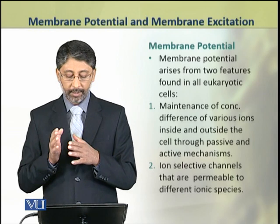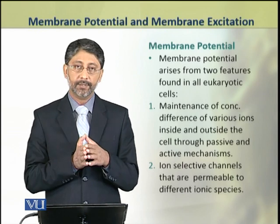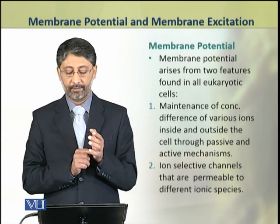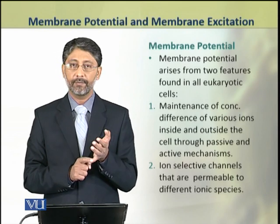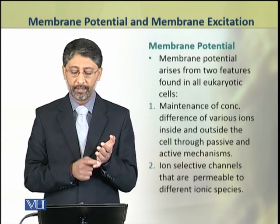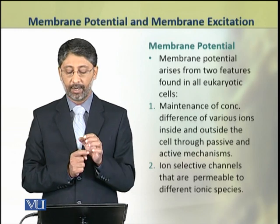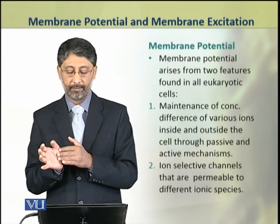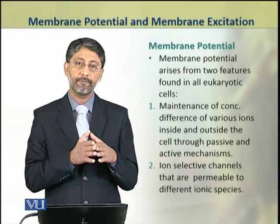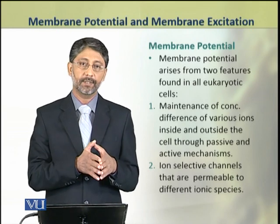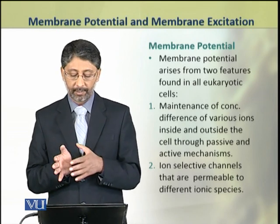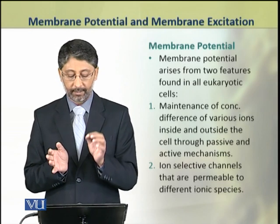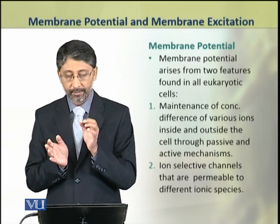The membrane potential arises because of two features found in all eukaryotic cells. One is the unequal distribution and maintenance of different concentrations of various ions inside and outside the membrane. The second is the presence of ion-selective channels that are permeable to various ionic species.